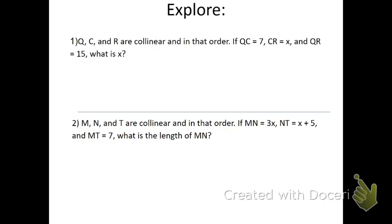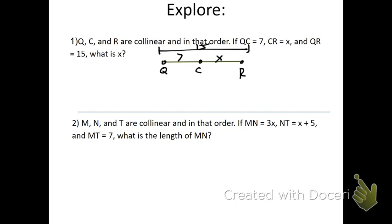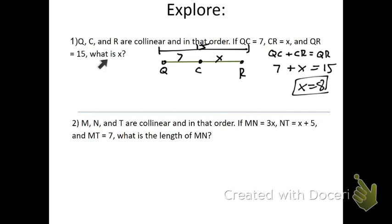Now let's work out a couple more problems just to practice this idea. Q, C, and R are collinear in that order. I'm going to draw a picture: we have Q, then C, then R. QC is 7, CR is X, and QR — the whole thing — is 15. We're asked to find X. We know QC plus CR equals QR — part plus part equals whole, that's our segment addition postulate. So 7 plus X equals 15. Subtracting 7 from each side, X equals 8.